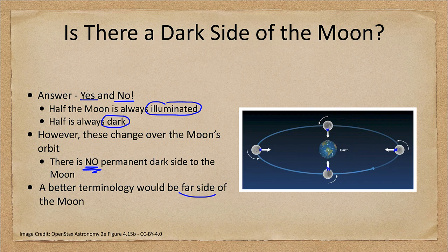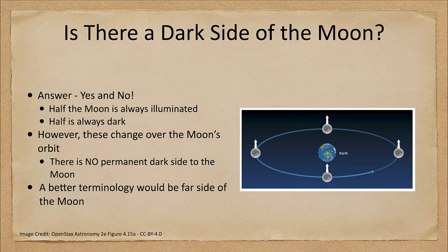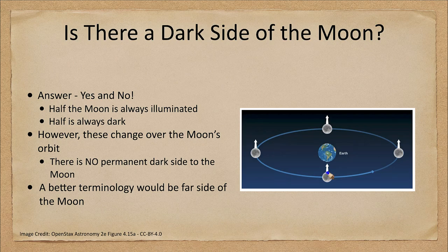Now, if the moon did not rotate, we would see things a little differently and we would actually be able to see the entire sides of the moon. Here we see that same location would be pointing toward Earth,